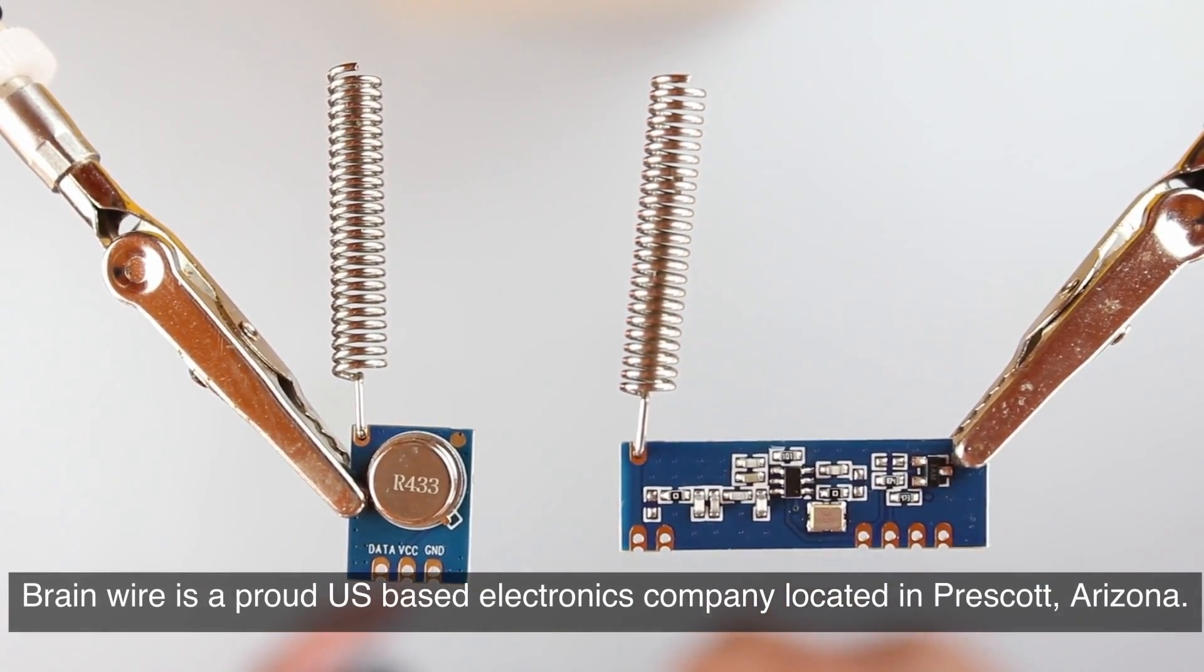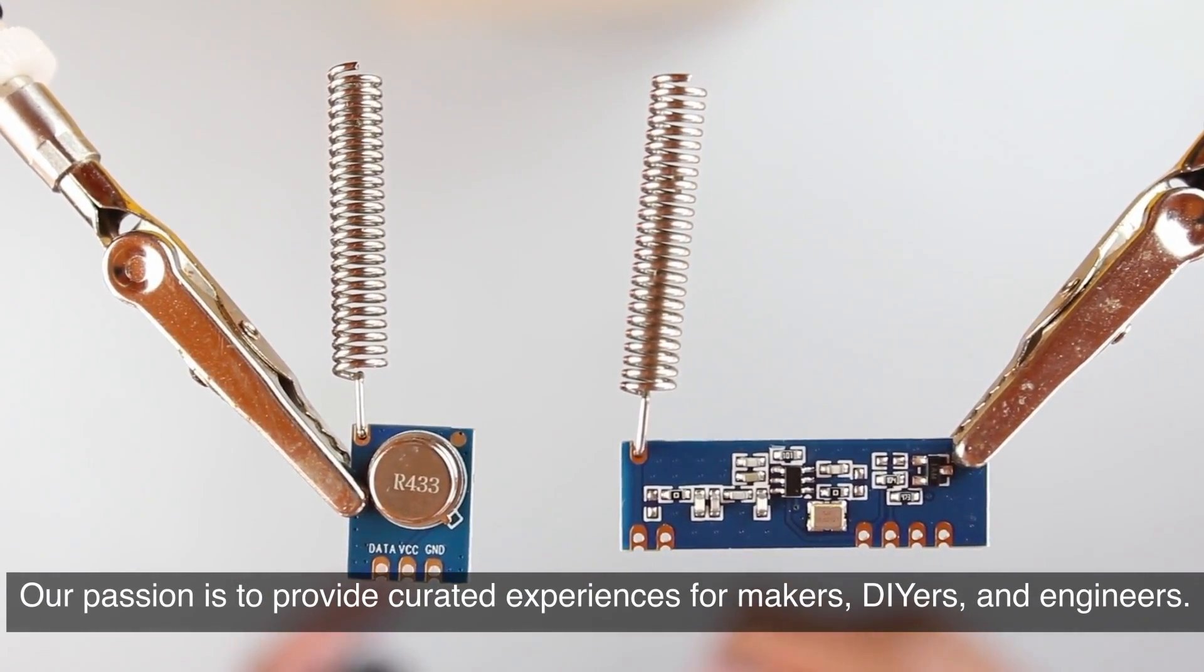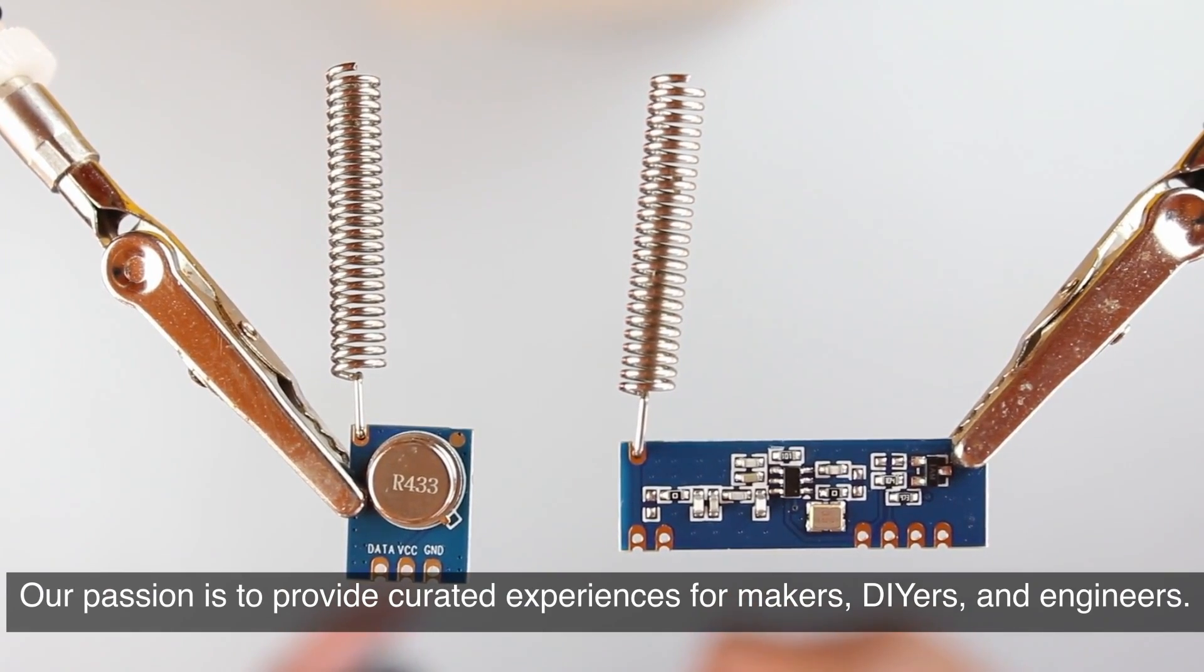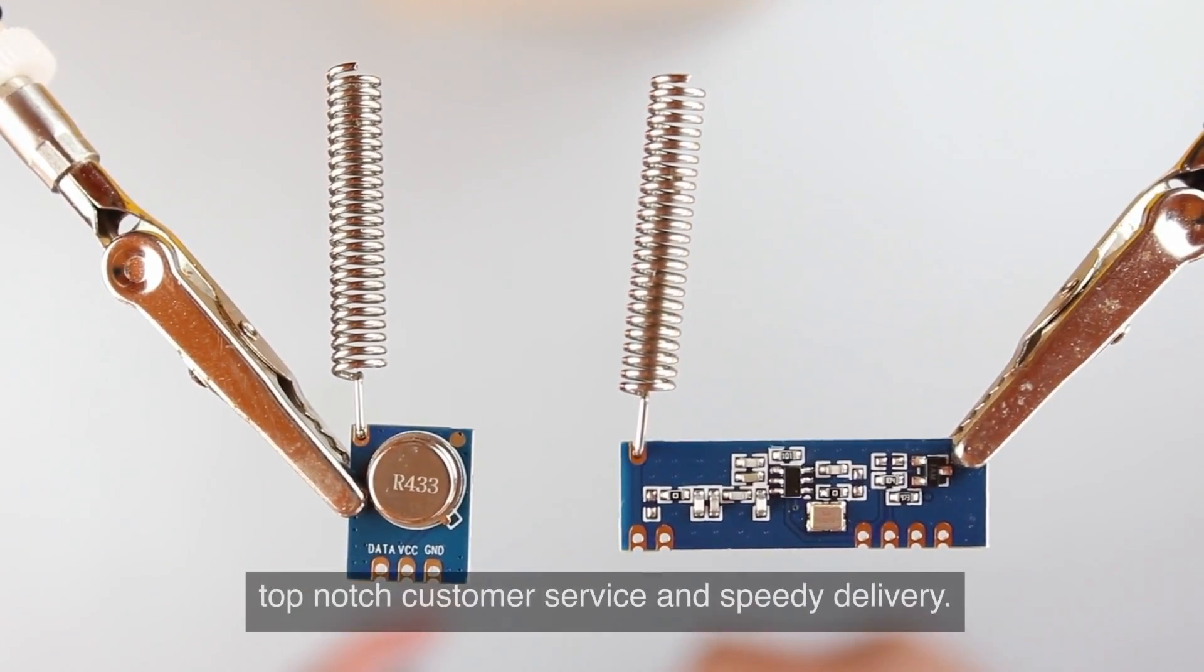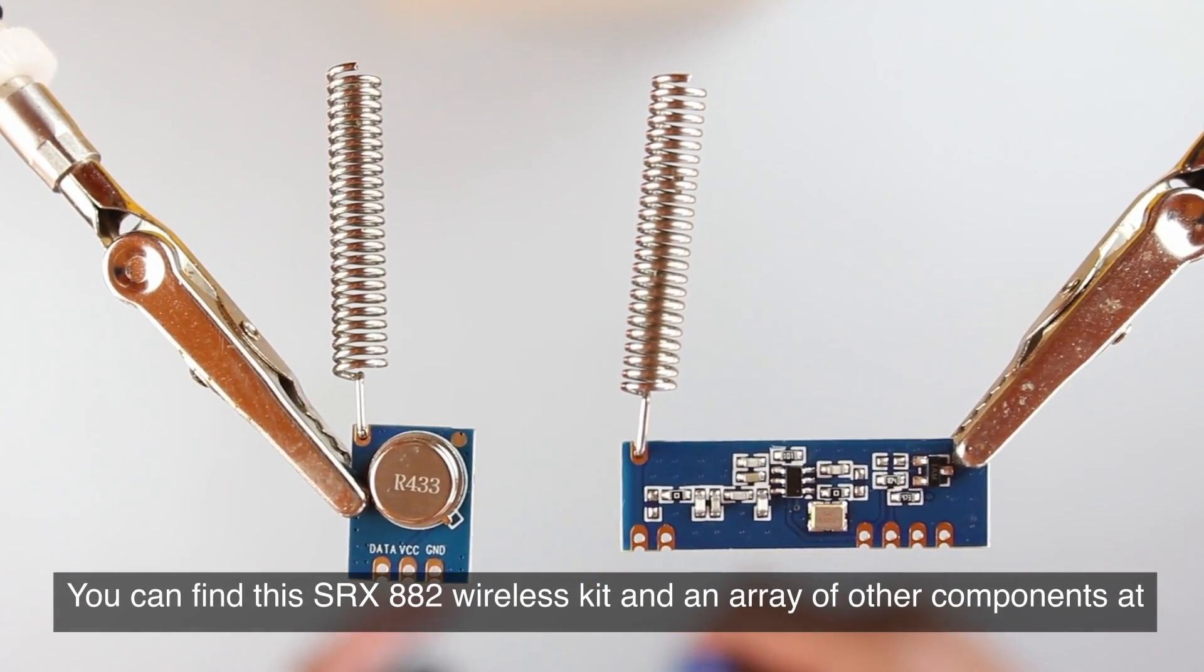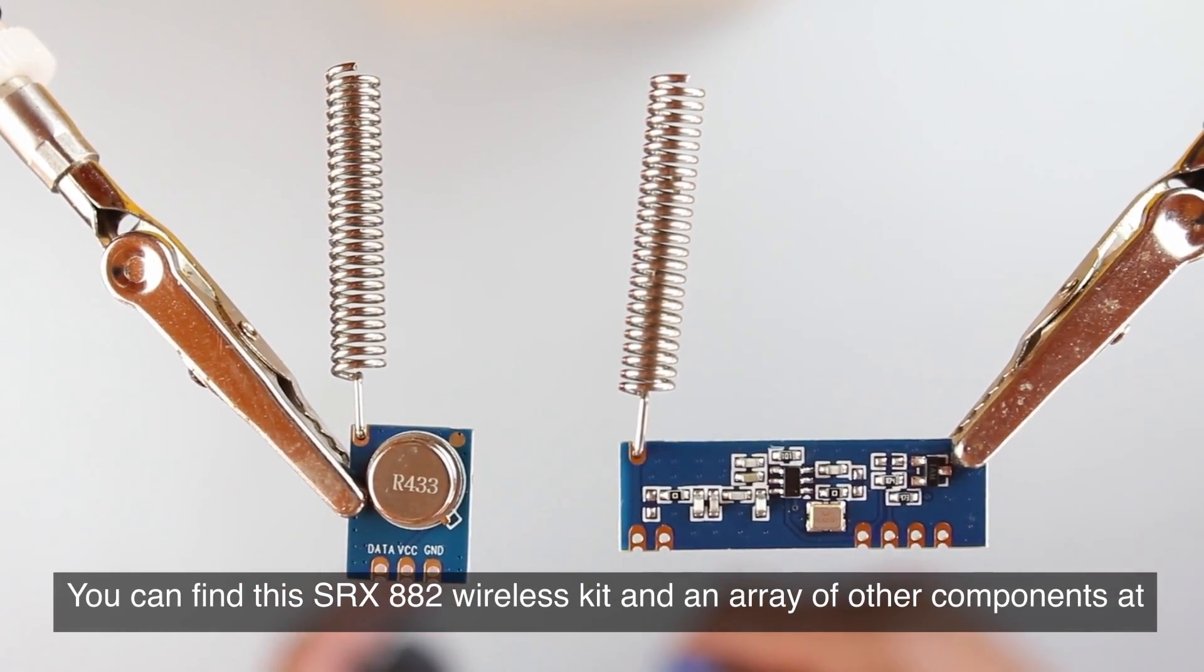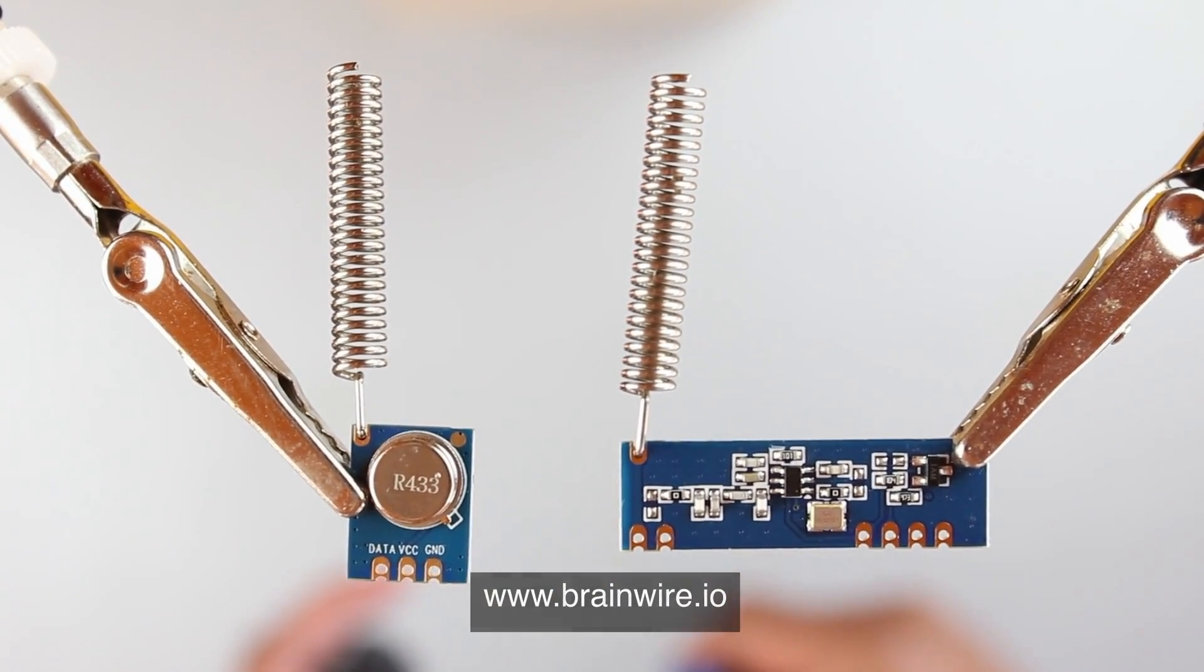Brainwire is a proud US-based electronics company located in Prescott, Arizona. Our passion is to provide curated experiences for makers, DIYers, and engineers. At Brainwire, we're committed to providing top-notch customer service and speedy delivery. You can find this SRX882 wireless kit and an array of other components at www.brainwire.io.